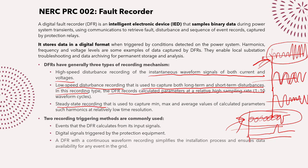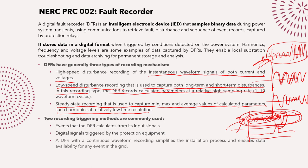The third type is steady-state recording, which captures minimum, maximum, and average values of calculated parameters such as harmonics at relatively low time durations. This can be used for long-term and short-term analysis — capturing fault conditions as well as pre-fault system operating conditions. For example, it can record harmonic content such as the second harmonic during transformer charging, and track maximum or minimum voltage over a given period.